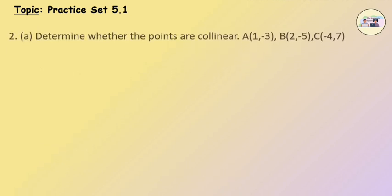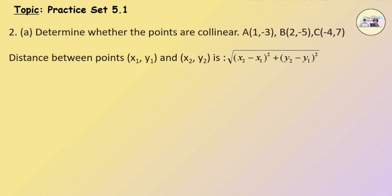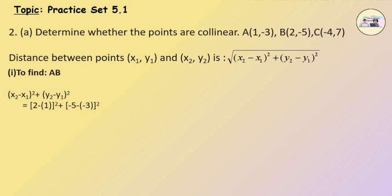Question 2, Sub-question 1: Determine whether the points are collinear. Solution: The distance between points (x1, y1) and (x2, y2) equals the square root of (x2 minus x1) squared plus (y2 minus y1) squared. To find AB: (2 minus 1) squared plus (minus 5 minus minus 3) squared equals 1 squared plus minus 2 squared, which gives 1 plus 4 equals 5. Therefore, AB equals root 5.